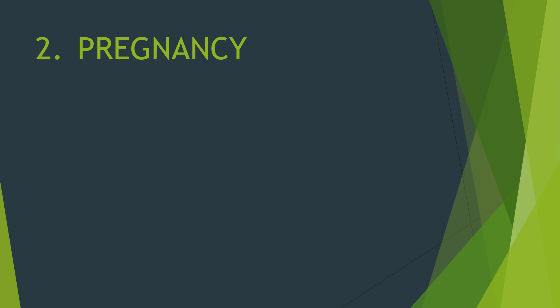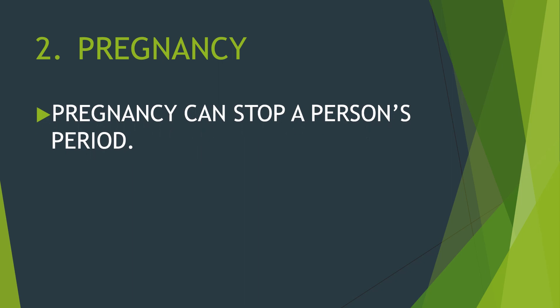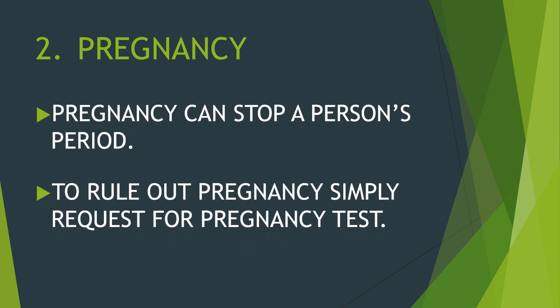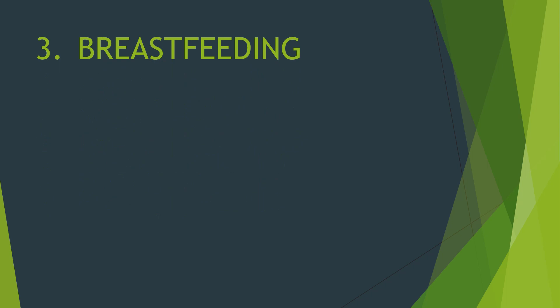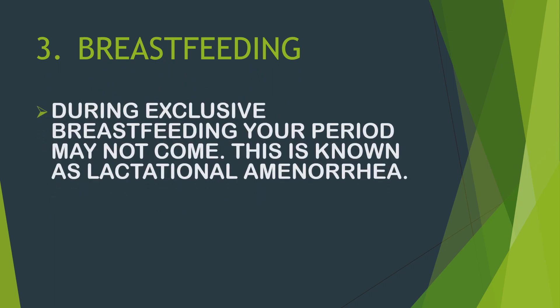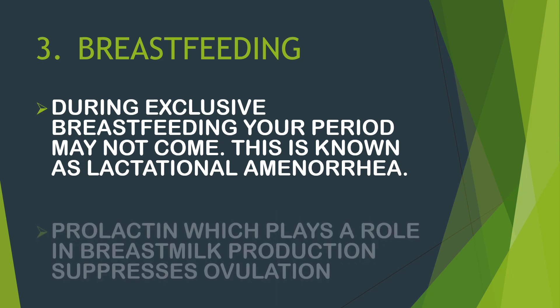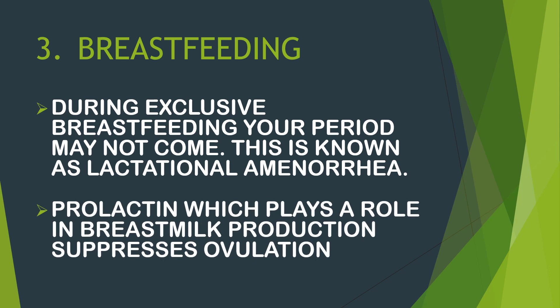Another cause of irregular menstruation is pregnancy. Pregnancy can stop a woman's period, and to rule out pregnancy, simply request a pregnancy test from your doctor or over the counter. During exclusive breastfeeding, your period may not come — this is known as lactational amenorrhea. Prolactin, which plays a role in breast milk production, suppresses ovulation.